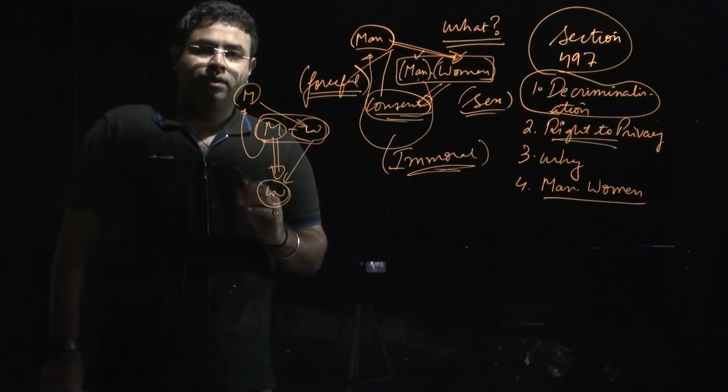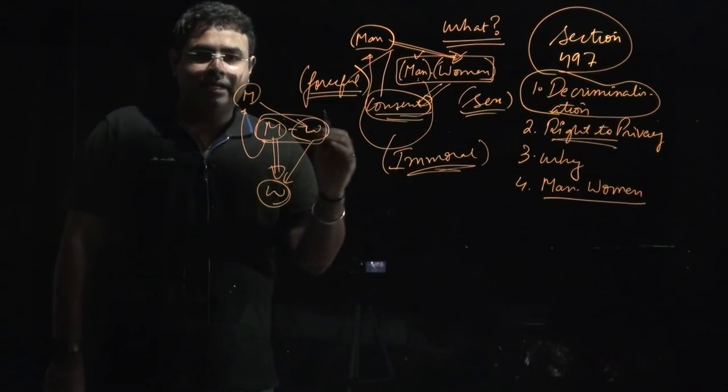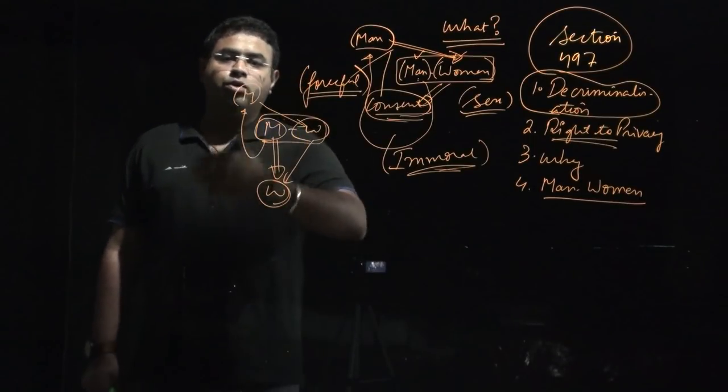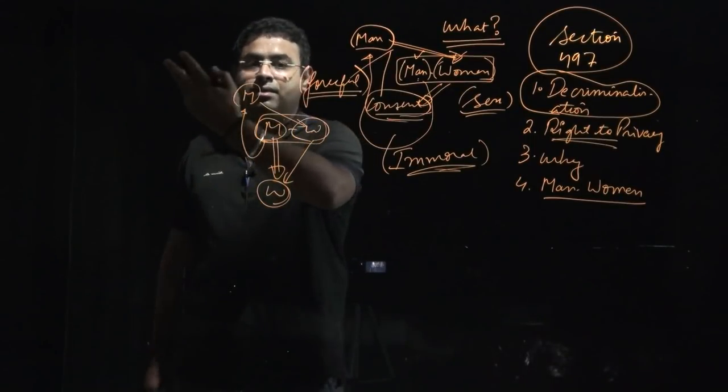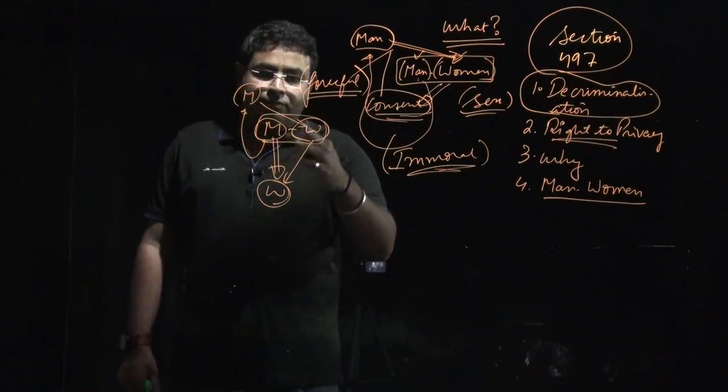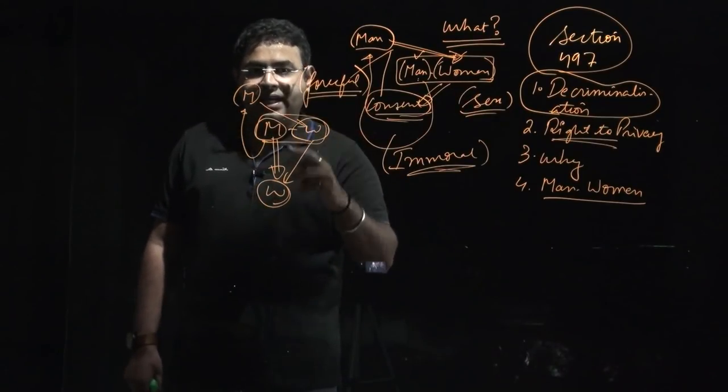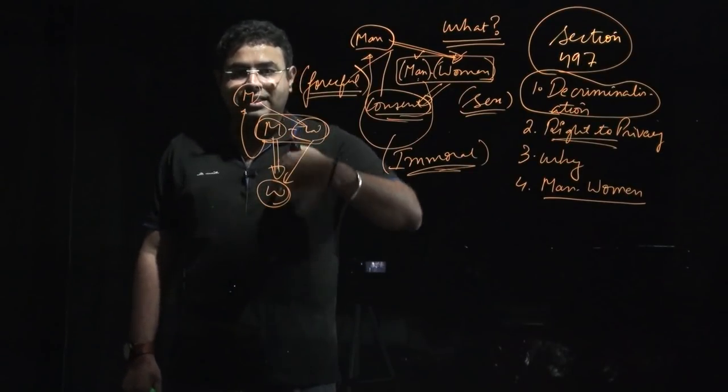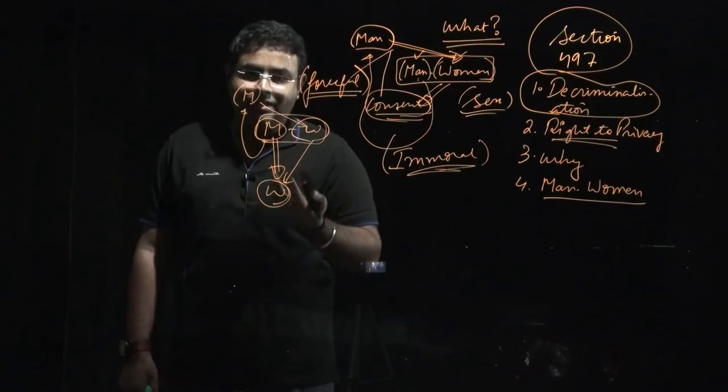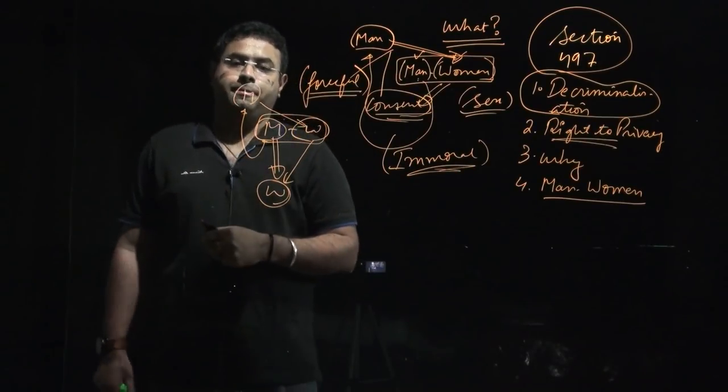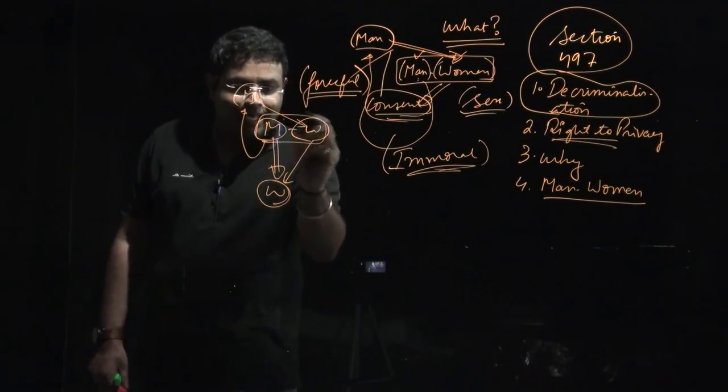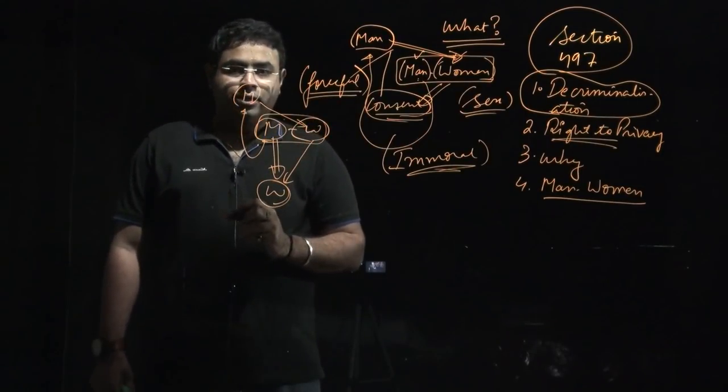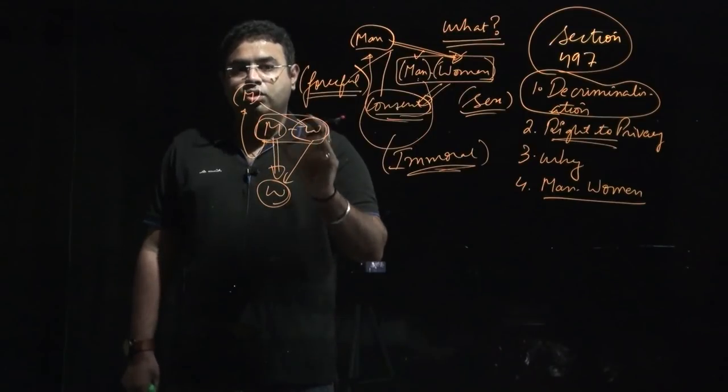Because under adultery law, it is only the married man who has been conferred the right to file a complaint against another man, but a woman cannot file a complaint against another woman by saying that her husband has indulged in sexual intercourse with another woman. So this is not categorized as adultery. So our adultery law is not sex neutral.